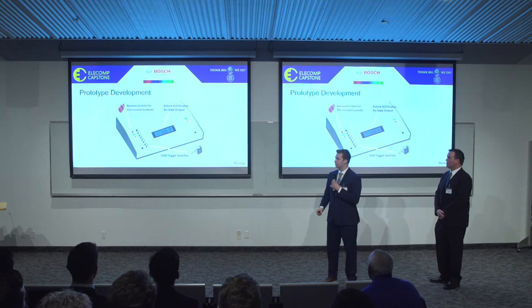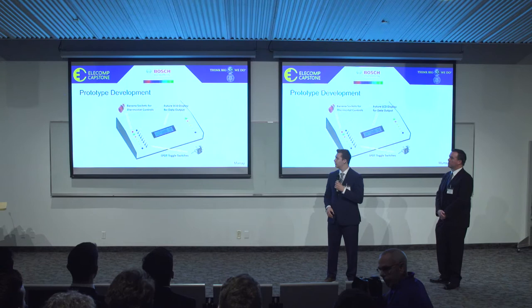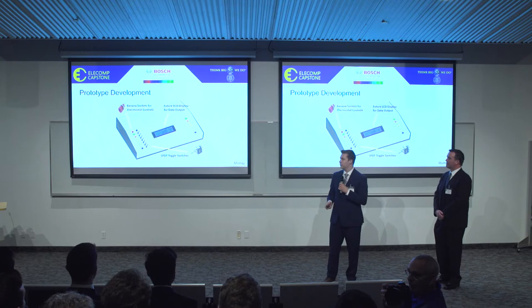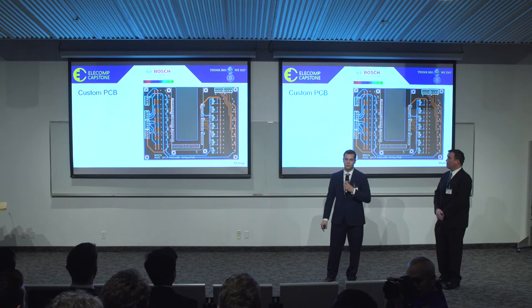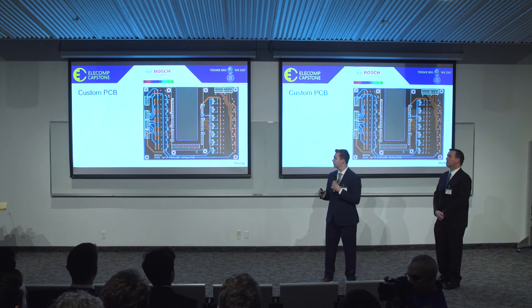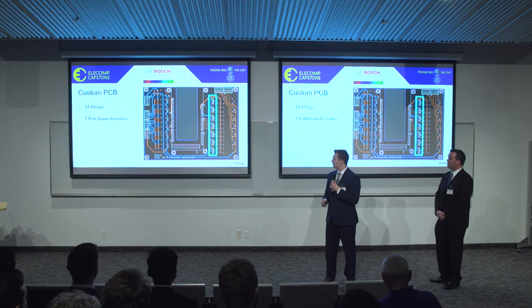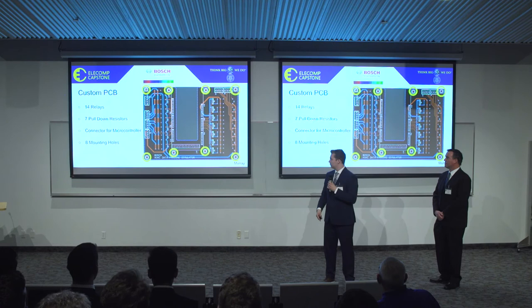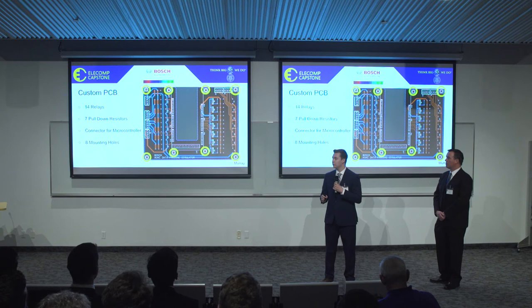This is the control box prototype that we designed and created. There are seven inputs for connecting directly to the thermostat control signals, followed by seven switches to allow the user to manually override any of these controls. We also left room for future components such as an LCD for data output. On the right are seven outputs connecting directly to the HVAC unit. A custom PCB was also designed and fabricated to house most of the circuitry and components inside the control box. This included both sets of relays, a set of pull-down resistors to ensure stable voltages going into the microcontroller, and a set of headers for connecting the microcontroller onto the top of the PCB. Eight mounting holes were added to allow the PCB to be secured onto the surface of the control box.